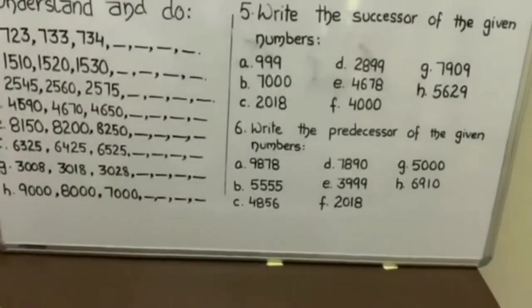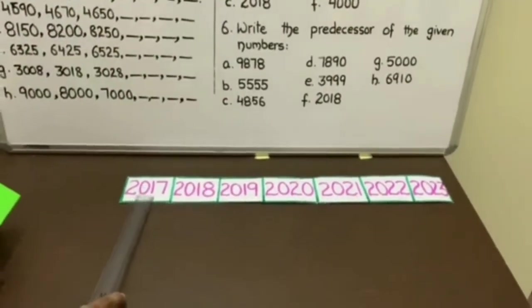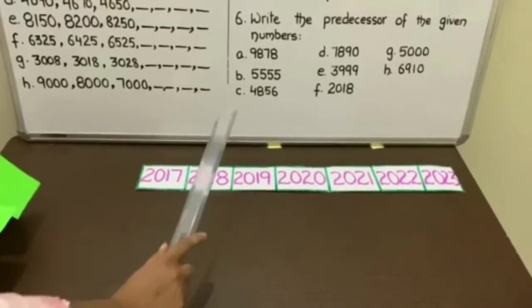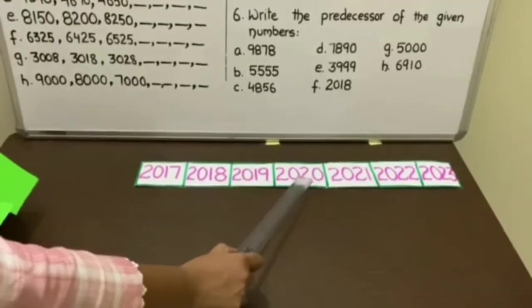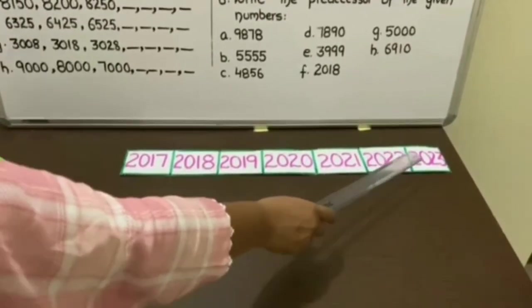Now, have a look on number line. 2017, 2018. Successor of 2018 is 2019, 2020, 2021, 2022 and 2023.